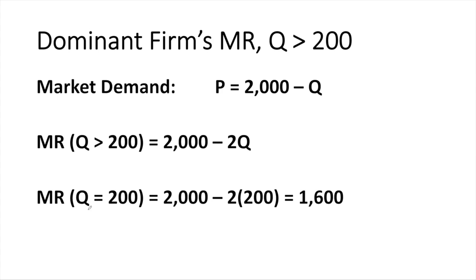If the quantity is greater than 200, the dominant firm's residual demand curve is the market demand curve, given by P equals 2,000 minus Q. For this segment, marginal revenue is given by 2,000 minus 2Q — again, the slope of the marginal revenue is double the slope of the demand. The marginal revenue at a quantity of 200 using this formula is 2,000 minus 2 times 200, which equals 1,600.